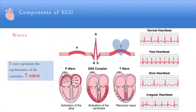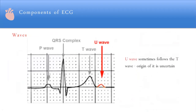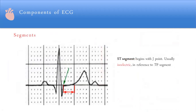The T-wave represents ventricular repolarization. The U-wave may be seen and is pathological in adults. Key segments include the ST segment and TP segment. The TP segment is the reference point. The J point is the junction between the QRS complex and the ST segment, and we assess for J-point elevation or ST depression.